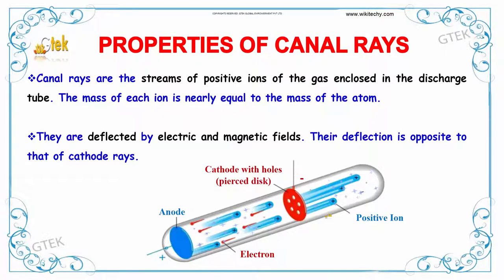You can see the positive ions here behind the cathode with holes. This is a positive ion, and this represents electrons.